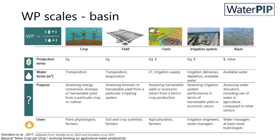Finally, at basin scale, economic water productivity is a key element of the concept of integrated water resources management, which focuses on the economic return of water use. Water productivity assessments can inform water allocation decisions, also in comparison to water use in other sectors. The Sustainable Development Goal 6.4 is also a global indicator for water use efficiency, which evaluates water use efficiency of different sectors into one indicator for river basin or national level monitoring.